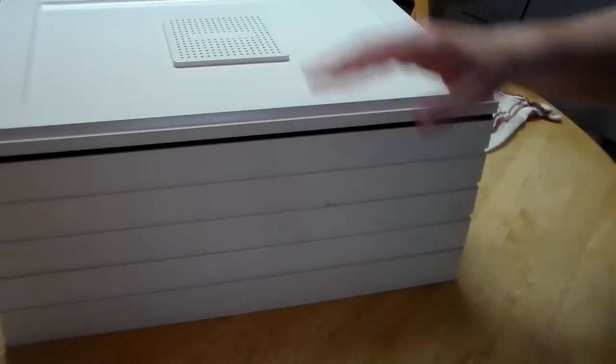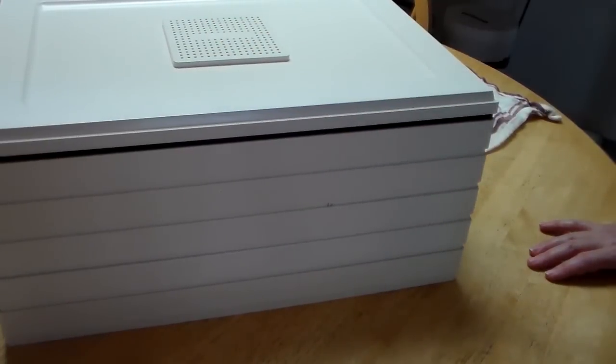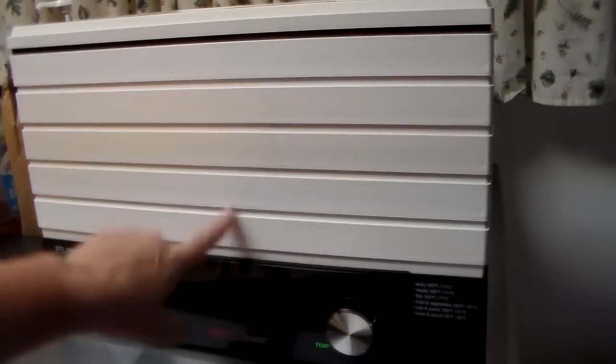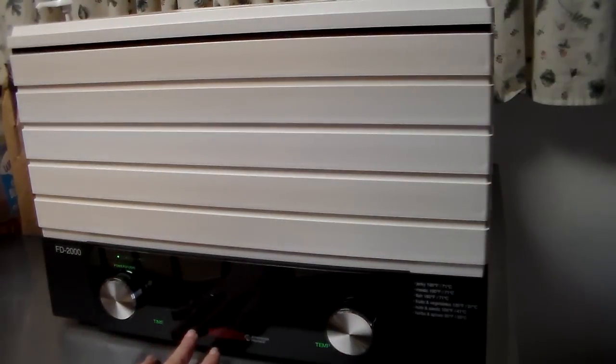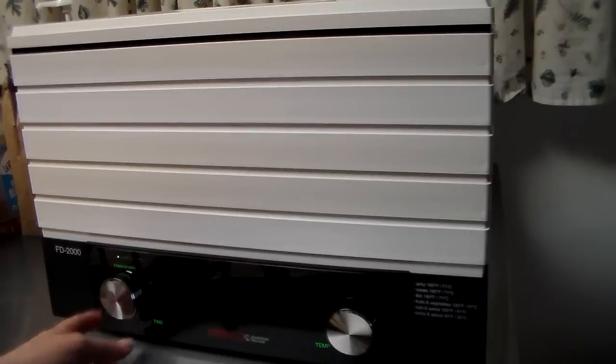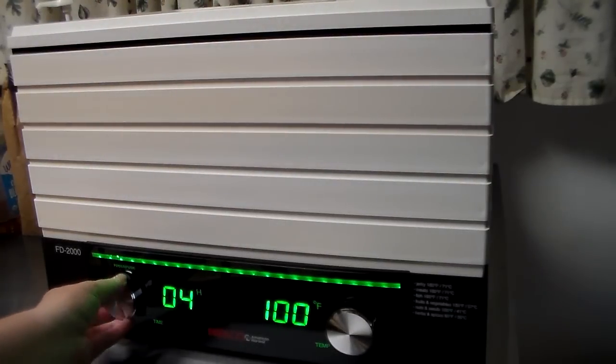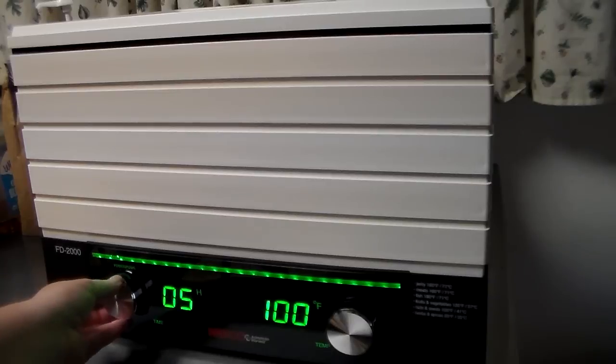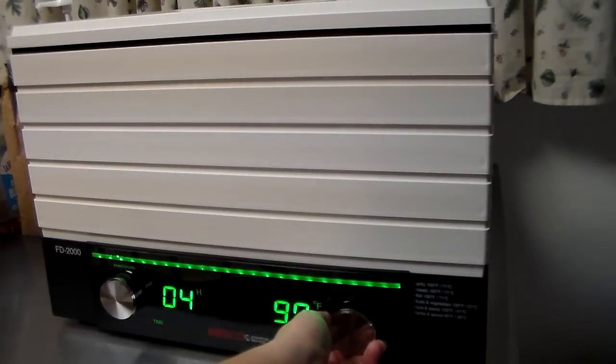Once you have all of your trays filled, go ahead and put our lid on it and we can put it onto the dehydrator unit. I was able to fill five trays with the dill, got the lid on top and it is on the dehydrator unit. We're going to go ahead and turn the unit on. We're going to start with four hours. Dill can take anywhere from four to six hours to dehydrate and we're going to dehydrate it at 95 degrees.